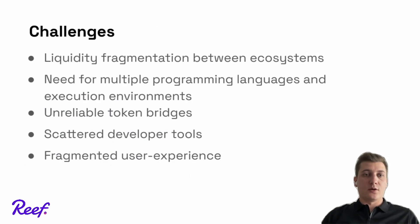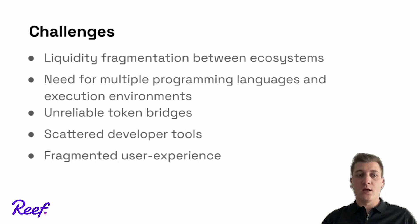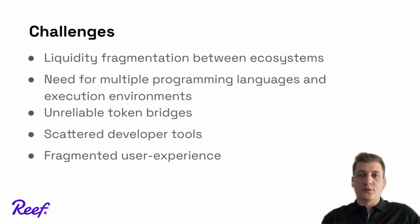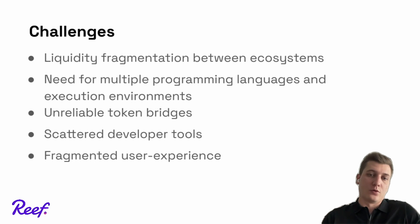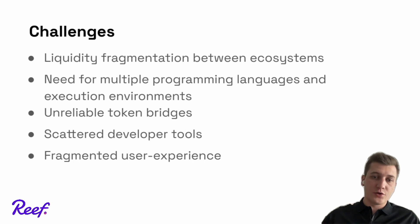Now let's talk about the current challenges in this landscape: liquidity fragmentation between ecosystems, need for multiple programming languages, reliable token bridges, scattered developer tools, and fragmented user experience. At the beginning of this cycle we saw the rise of a multi-chain world. The smart contract landscape was underserved — developers wanted more programming languages and more efficient environments, while users demanded better UX and cheaper interaction. But multi-chain led to a new set of challenges, such as fragmented liquidity between ecosystems, which led to the creation of bridges.